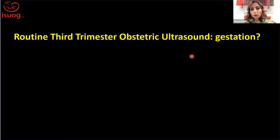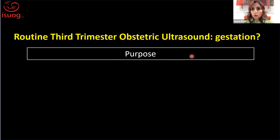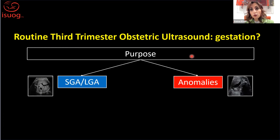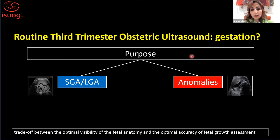If we are going to plan a routine third trimester obstetric ultrasound, what gestational age window should we plan it for? That depends very much on the purpose of the scan — whether it is mainly to look for growth abnormalities like small or large babies, or whether we are looking to improve detection of structural anomalies in the third trimester. Because there is a trade-off.